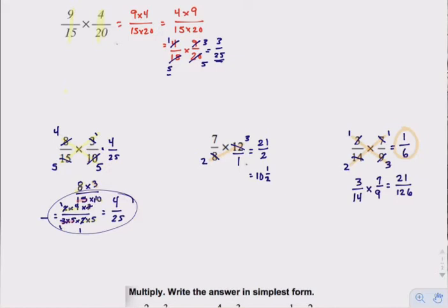Some people will say they'd rather just simplify when they're done, which is fine, but cross-cancelling makes life easier. You're going to want to get into the habit of cross-cancelling. It's not hard — don't make it harder than it is. All we're doing is looking not just numerator to denominator, but along the diagonals — numerator of one fraction to the denominator of the other — looking for common factors and dividing them out before we multiply.